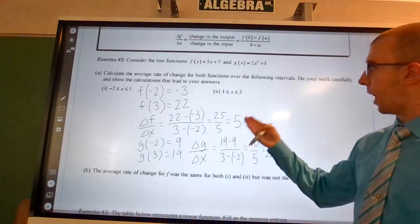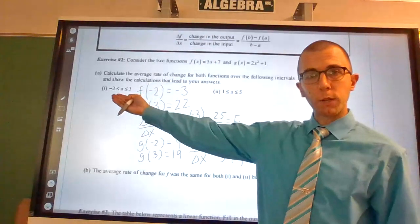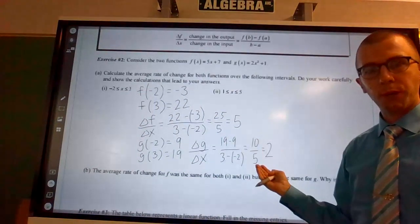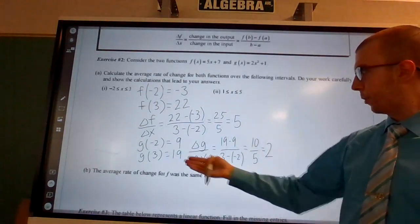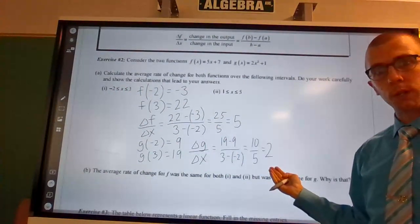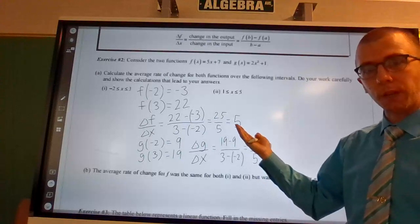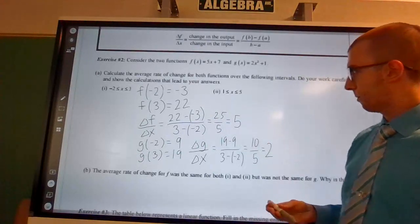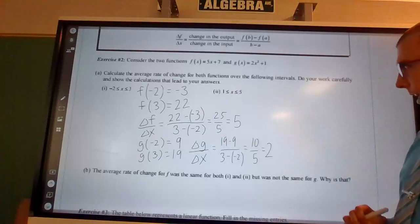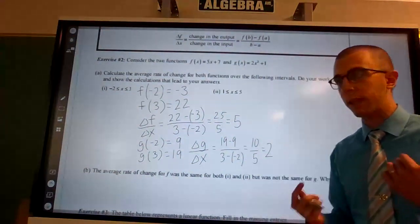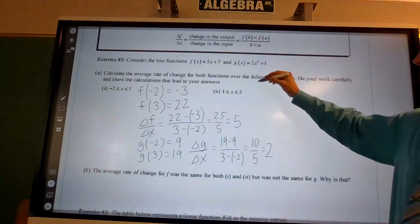So the average rate of change for f of x on the interval from negative 2 to 3 is 5, but the average rate of change for g of x from the interval negative 2 to 3 is 2. So f of x is changing faster on that first interval. Well, now we're going to find the average rate of change over this interval to see a little bit more of what's going on inside these functions.